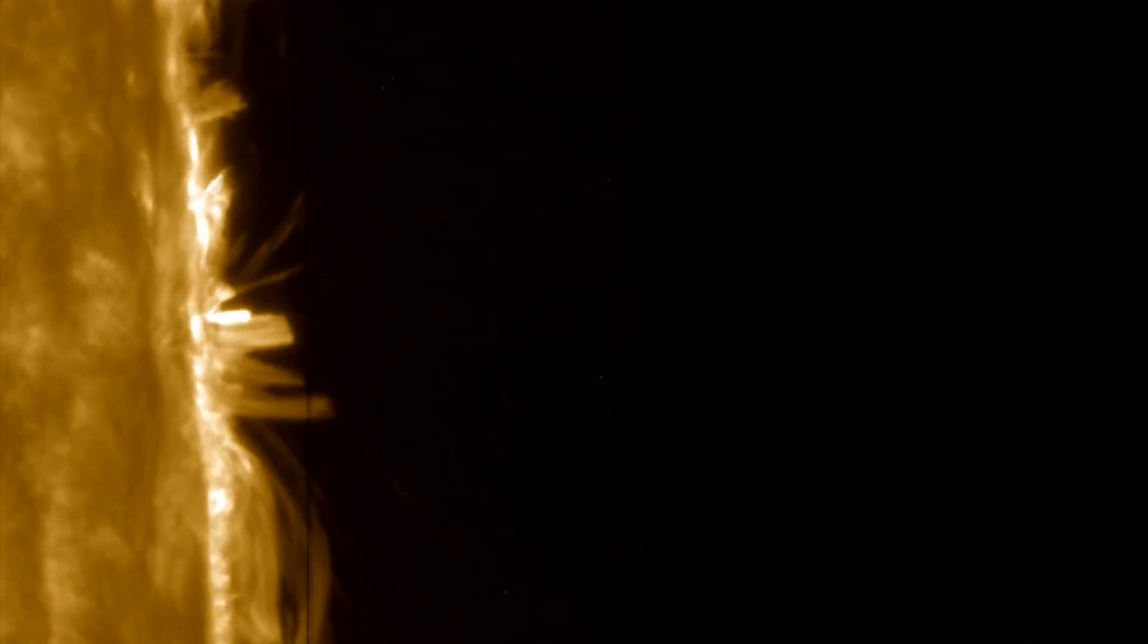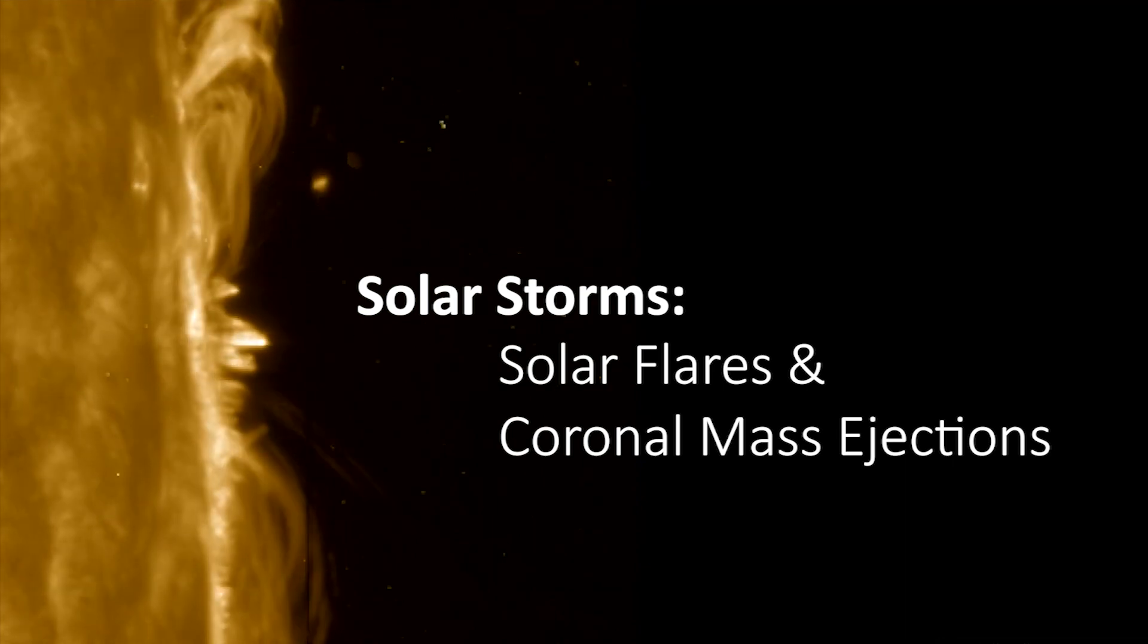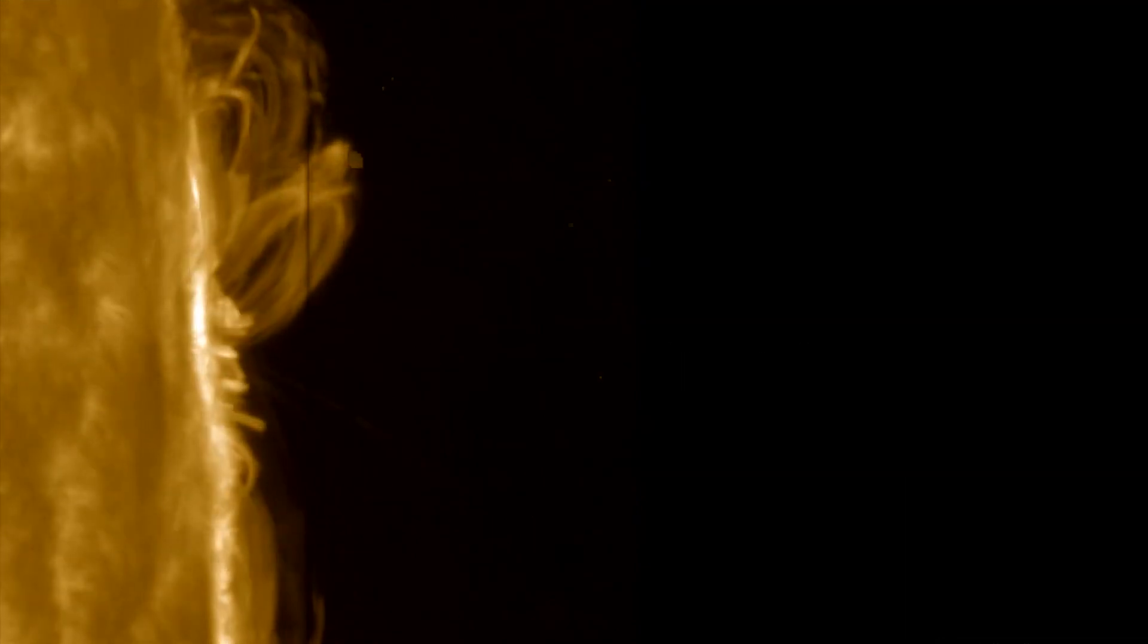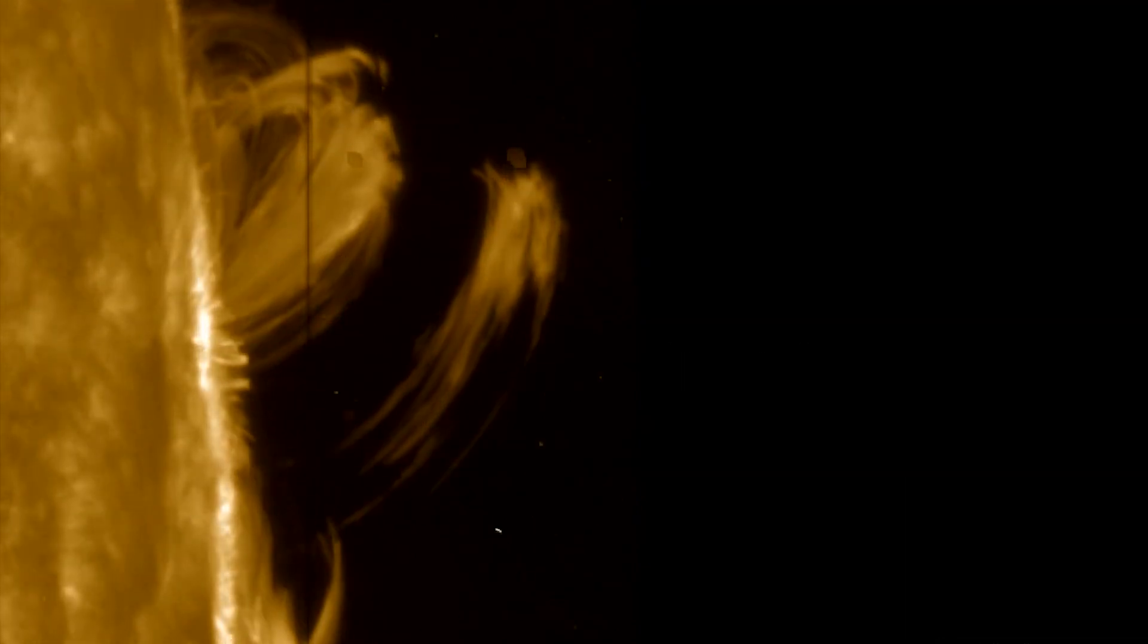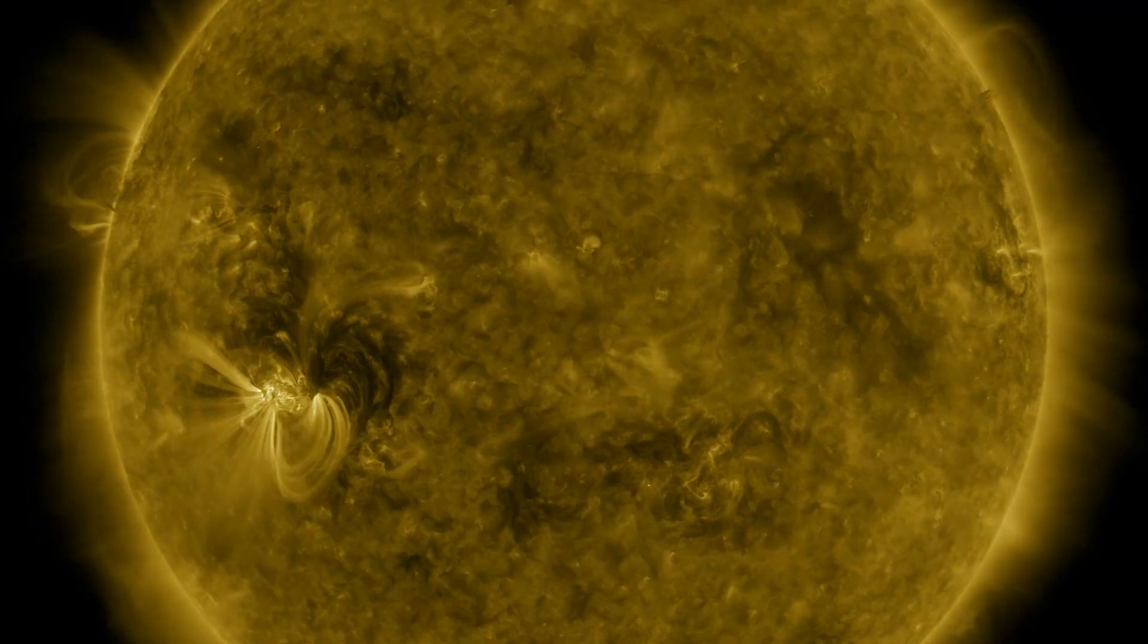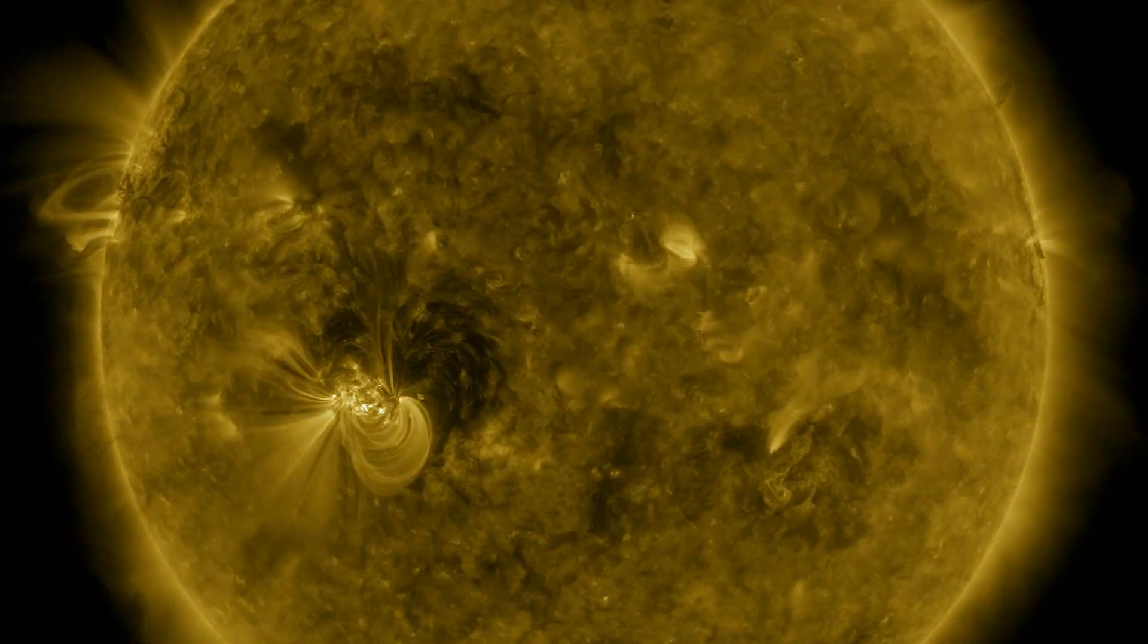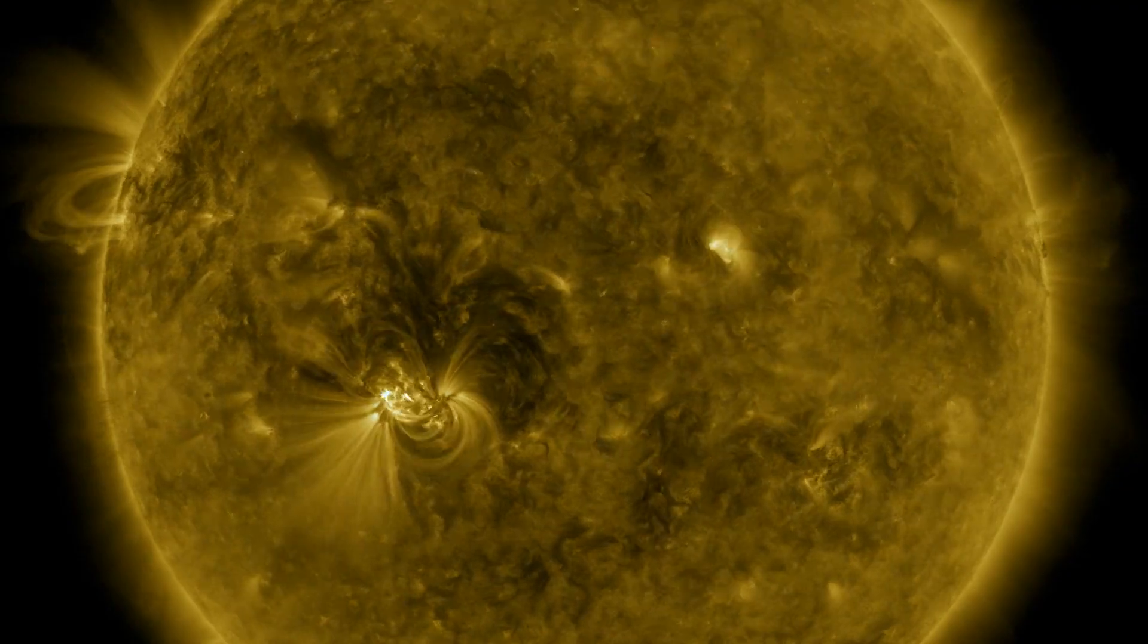These active regions often generate solar storms, solar flares, and coronal mass ejections, which are eruptions of material thrown from the Sun's surface and out into space. They can get exceptionally large and reach sizes many times bigger than Earth.